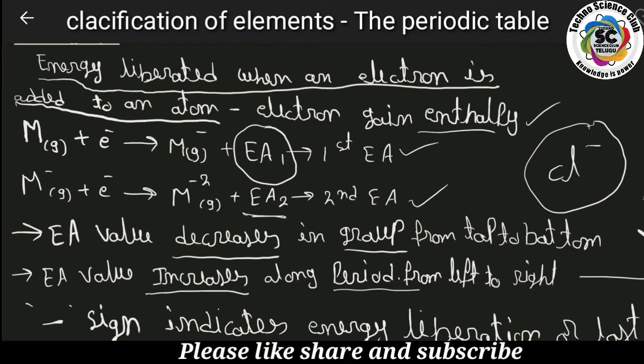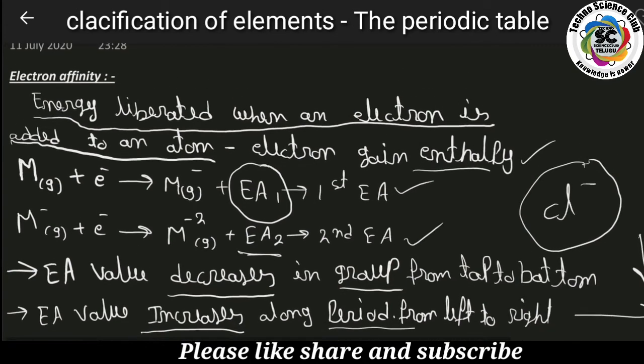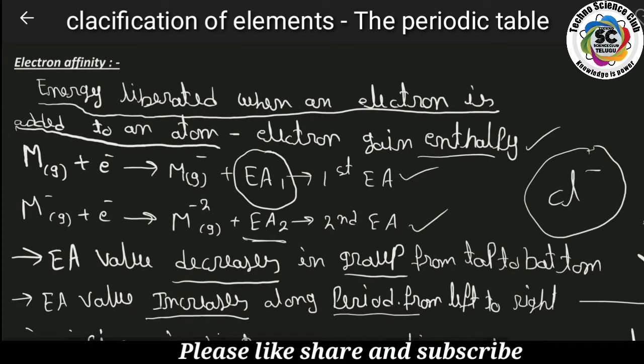The electron affinity value increases in periods from left to right. Going left to right across a period, atomic size decreases but the number of electrons and the attraction between the nucleus and the electrons increases. Because of this increased attraction, electron affinity increases across a period.